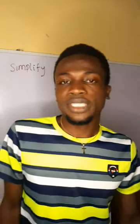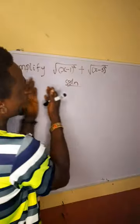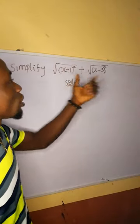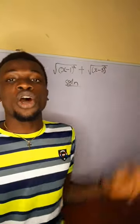Hello and welcome back to another section of OkoSAM online tutorial. Let us consider this question on the board quickly. We have to simplify the square root of x minus 1 raised to power 2 plus the square root of x minus 3 raised to power 2.